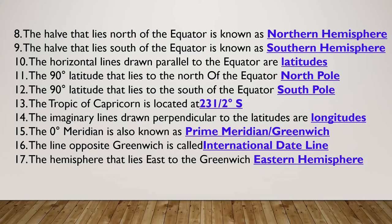The horizontal lines drawn parallel to the equator are called latitudes. The 90 degrees latitude that lies to the north of the equator is the North Pole. The 90 degrees latitude that lies to the south of the equator is the South Pole. The Tropic of Capricorn is located at 23.5 degrees south of the equator.